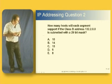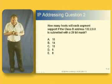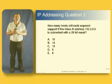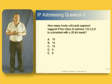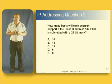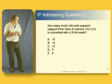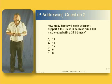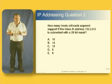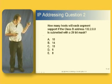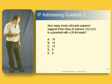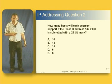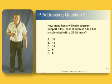Let's have a look at the second type of question. This one says: how many hosts will each segment support if the class B address 132.2.0.0 is subnetted with a 29-bit mask? The first thing we've got to do is work out what a 29-bit mask is, and then we can find out how many hosts are applicable from the list of possible values.